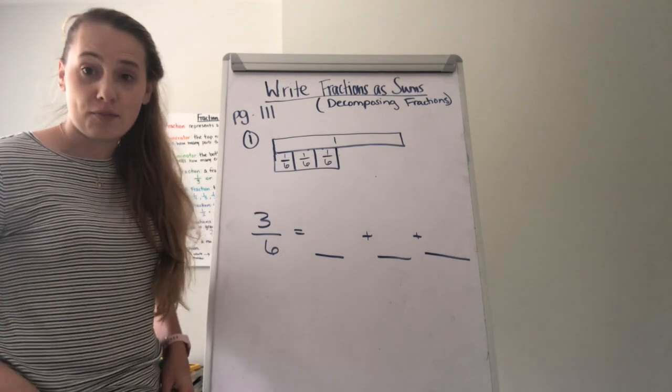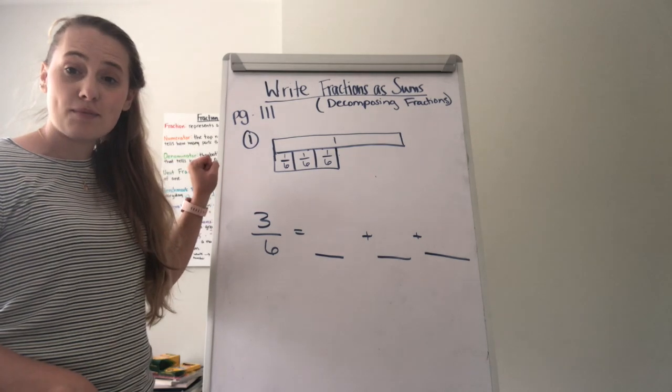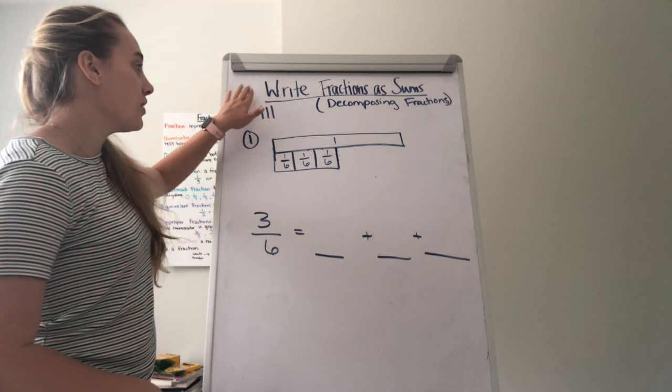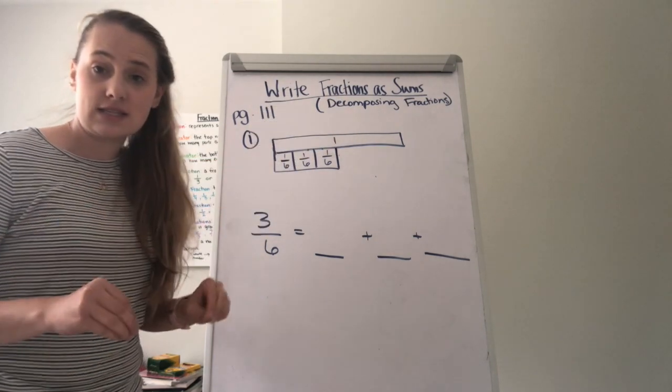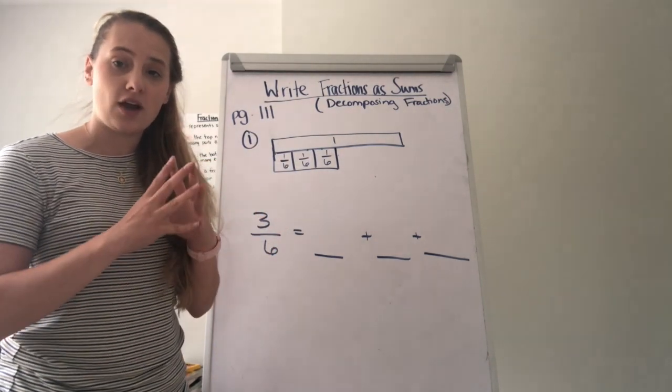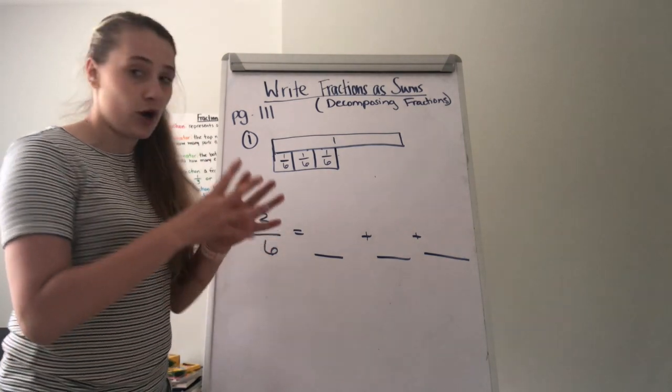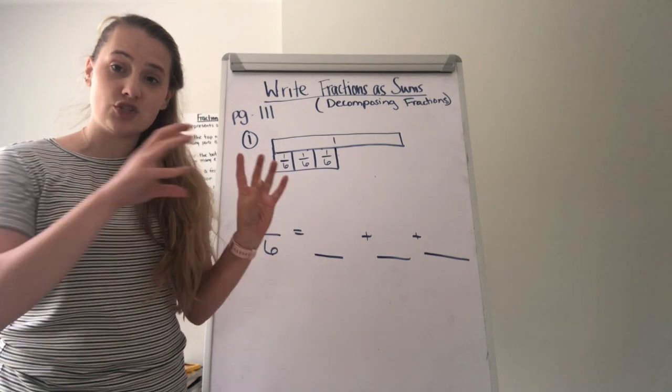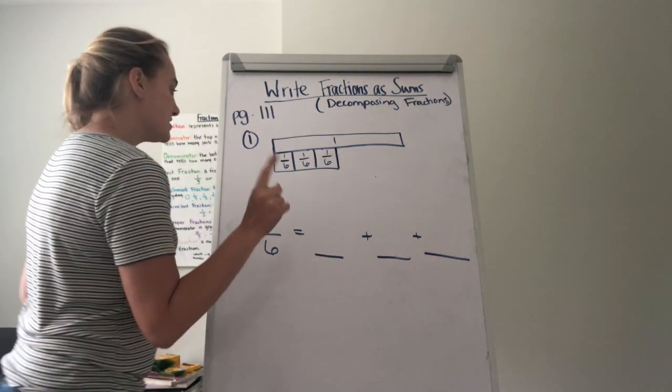So now we're on to my whiteboard and we are looking at number 1. We are still on page 111. So we're looking at write fractions as sums. And remember, I call this decomposing. We're taking a number and we're decomposing it. We are taking 3/6 here and we're breaking it apart into smaller fractions. Okay.